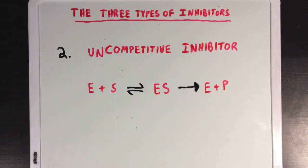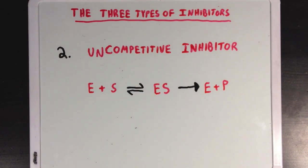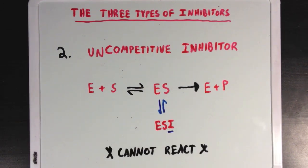Our second type of inhibitor is called an uncompetitive inhibitor. And it works by binding to the enzyme-substrate complex to form ESI, which prevents the enzyme from turning the substrate into product.